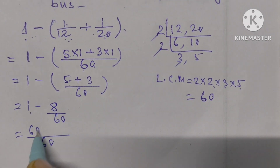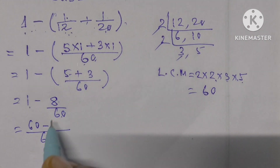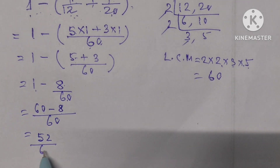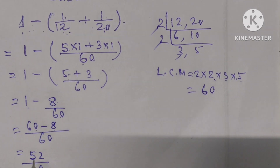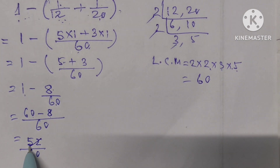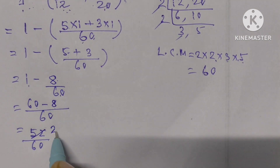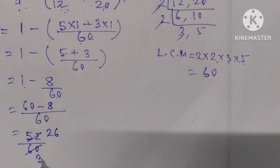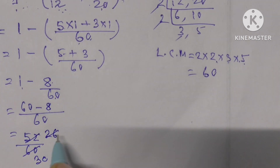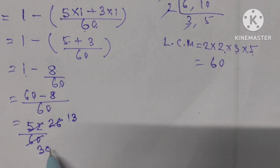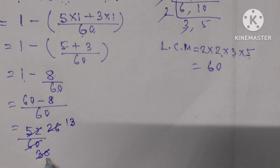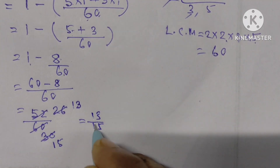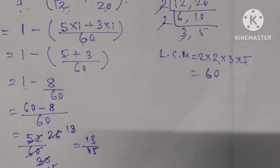60 by 60 minus 8 by 60 equals 52 by 60. Since 52 and 60 are both divisible by 4, we simplify: 52 divided by 4 is 13, 60 divided by 4 is 15. So 13 by 15 parts of the distance they traveled by bus.